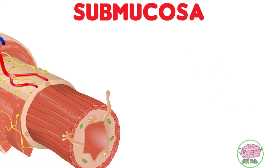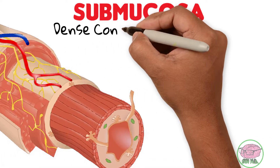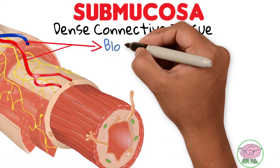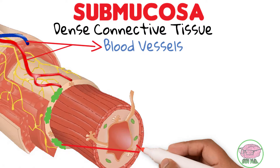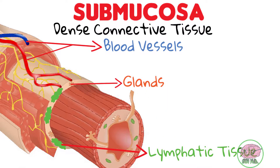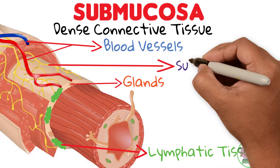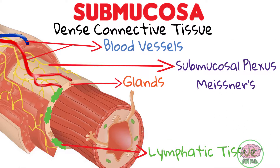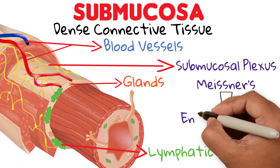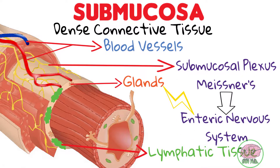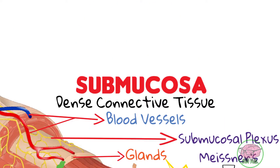The submucosa is made up of dense connective tissue with numerous large blood vessels, lymphatic tissue, and glands. It also has autonomic nerves that form the submucosal plexus, or Meissner's plexus, which is part of the enteric nervous system that stimulates glandular secretion.